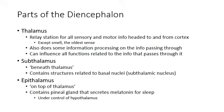Now on to the diencephalon. It has four main structures: the thalamus, the subthalamus, the epithalamus, and the hypothalamus — of those, the thalamus and hypothalamus are the most important. The thalamus is your relay station: all sensory information coming in from your body going to the cortex stops in the thalamus first, except for smell, which goes directly to the cortex. Everything else — touch, vision, taste, hearing, and balance — goes through the thalamus before reaching the cortex, giving the thalamus the opportunity to modify that sensory information.